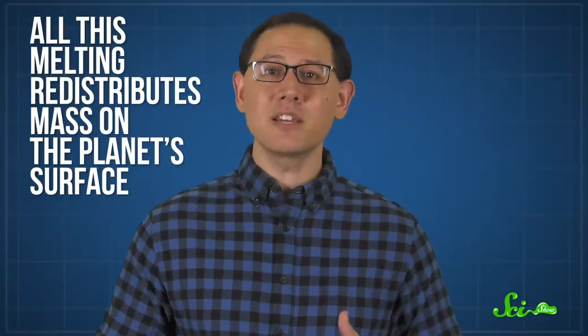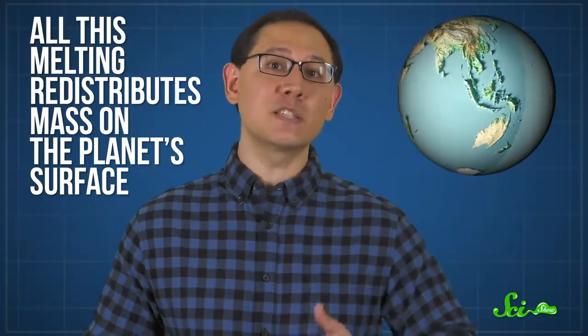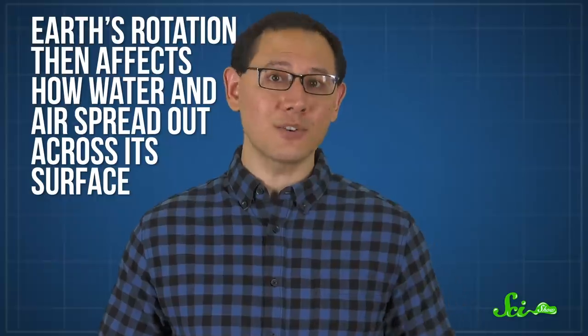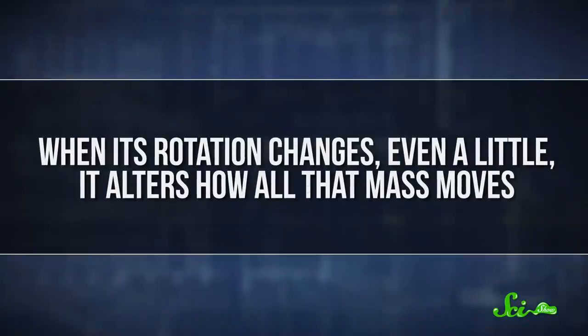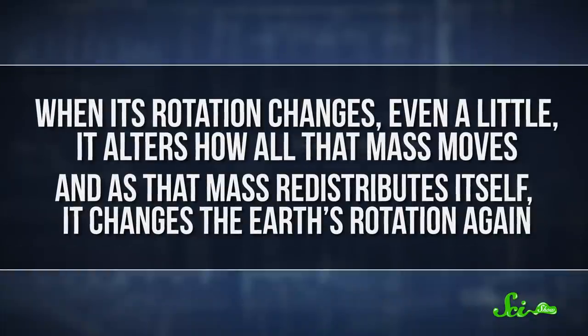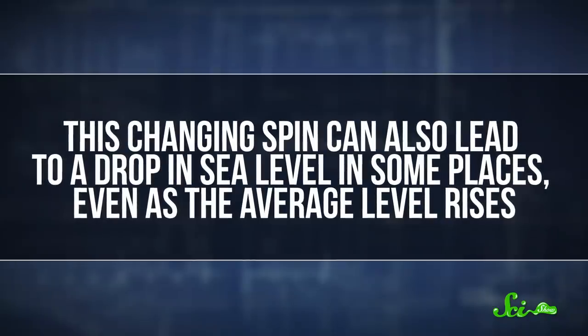Second, all this melting redistributes mass on the planet's surface. And that changes how the Earth itself spins in space. That's right, by heating our planet, we are melting glaciers which shifts the Earth's mass, which changes how our planet moves in space. And that's not the end of the story. Earth's rotation then affects how water and air spread out across its surface. When its rotation changes, even a little, it alters how all that mass moves. And as that mass redistributes itself, it changes the Earth's rotation again. This changing spin can also lead to a drop in sea level in some places, even as the average level rises.